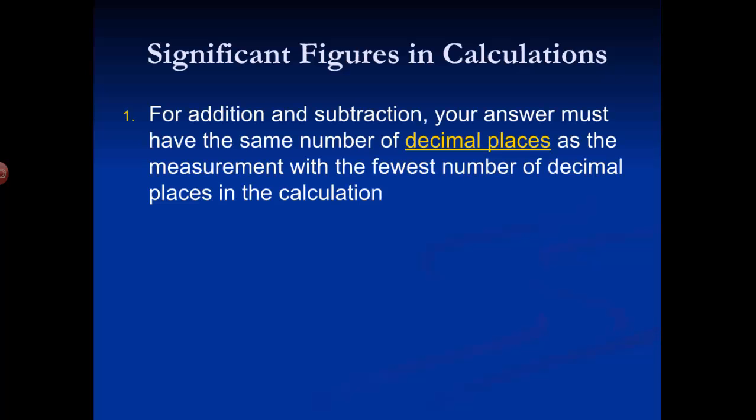The first rule has to do with addition and subtraction. When you add or subtract any numbers, your answer has to have the same number of decimal places as the measurement with the fewest decimal places in the calculation. You look at each number you're adding or subtracting, find the one with the fewest decimal places, and round your answer to that many decimal places. Simple — you don't have to know why, you just have to do it.